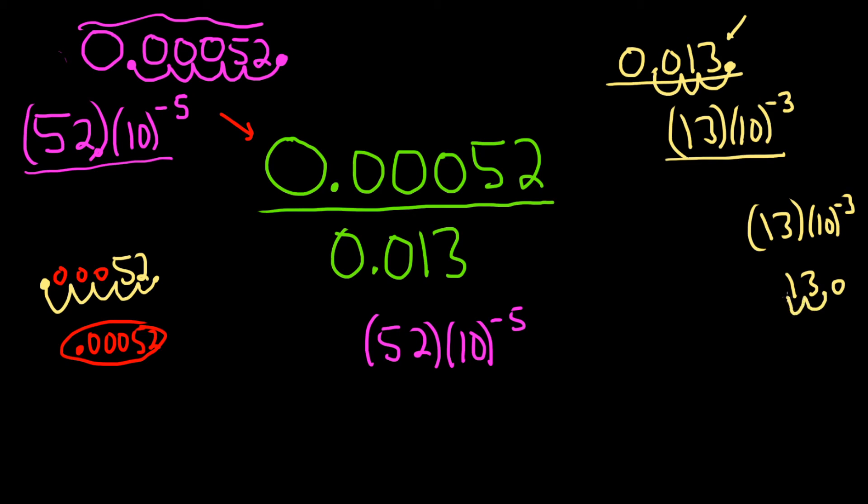And then you put your 0. And that gives you .013. So that checks with what's on the bottom. So this is, in fact, correct.